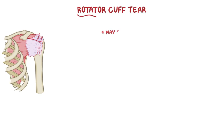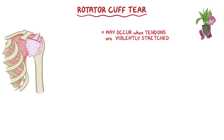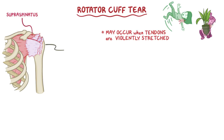A rotator cuff tear may occur when the tendons are violently stretched, like when you jerkily lift up something which is too heavy, or accidentally fall on an outstretched arm. This most commonly affects the supraspinatus tendon at its insertion on the greater tubercle of the head of the humerus, because it's under a lot of tension when the shoulder is abducted.